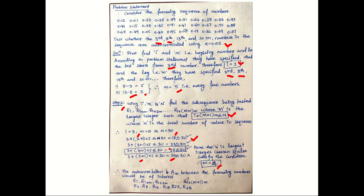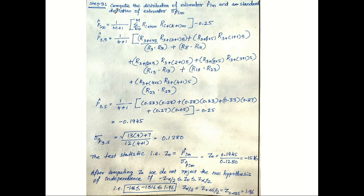We generate the subsequence considered for testing: Ri, Ri+m, ..., Ri+(M+1)m. That is, the 3rd number R3, the 8th number R8, the 13th number R13, the 18th number R18, the 23rd number R23, and the 28th number R28. All these numbers are selected for the autocorrelation test.